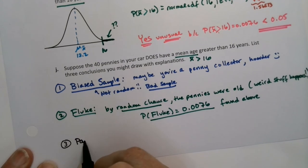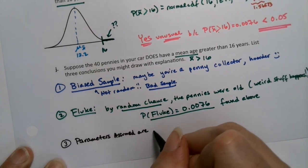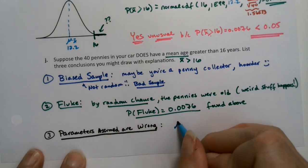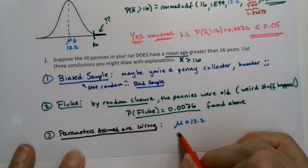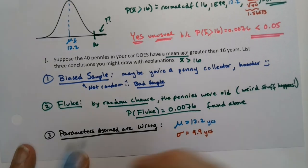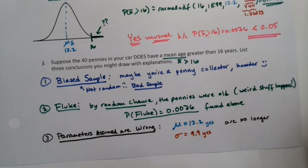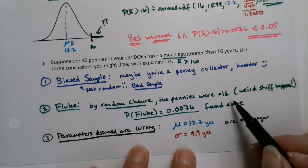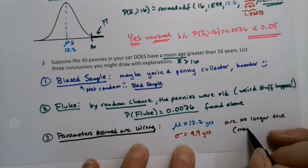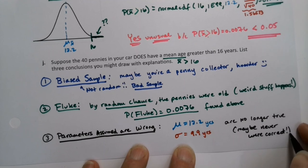And that's the third option. So the third option is the parameters you assumed, we assumed, are wrong. And what would that mean? So the parameters are wrong means that the mean which was 12.2 and/or, so it could be both of them are wrong, it could be one of them was wrong. The sigma, which was 9.9, both of these were years, are no longer correct or maybe never were. And that's where we head to in chapter 10. So you start making the decision between these two. You try to decide, hey maybe it's just a random fluke or maybe no, no, no, what I assumed to be true is no longer the case. Or maybe they never were. Maybe they were always wrong all along and we never knew it.